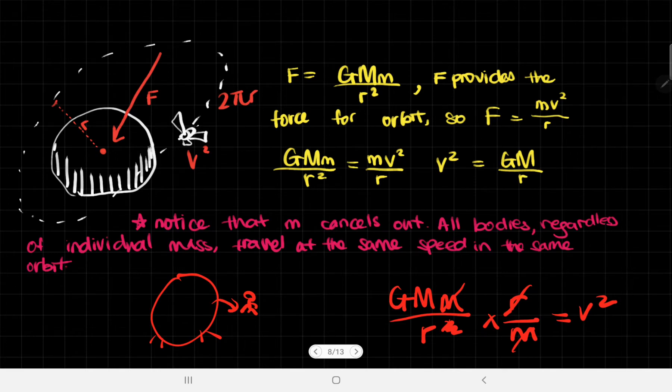For all the gravitational fields created by Earth, the same orbit will have the same separation, and therefore they will all travel at the same velocity. This is also great because two satellites in the same orbit will not bump into each other because they're traveling at the same speed.